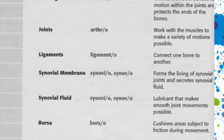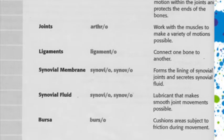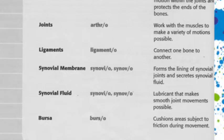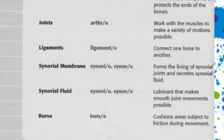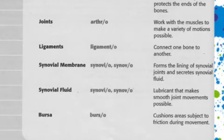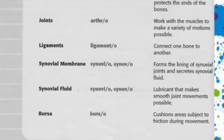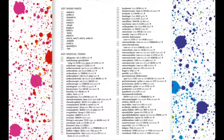Synovial fluid is the lubricant that makes smooth joint movements possible. The word roots for synovial fluid are interchangeable with the synovial membrane: synovi, synovio, synov, synovo. Finally, the bursa cushions areas subject to friction during movement. The word root for bursa is burs, burso.